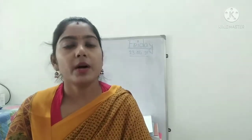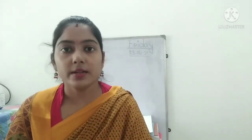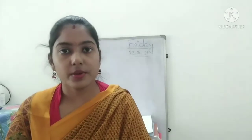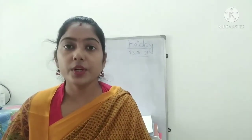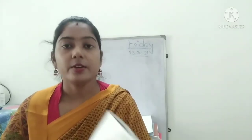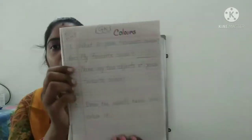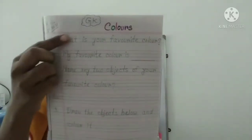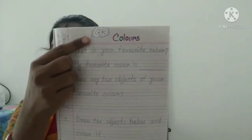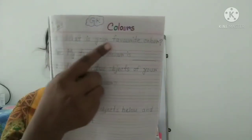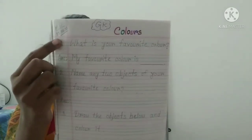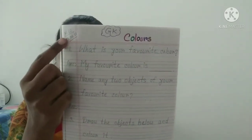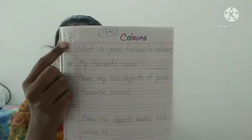You will do that in your GK copy. They have to learn the question-answer. So what you have to do in your copy is that first take out the page in your GK copy and you will write the heading on the top of your page — GK means general knowledge. After then, the topic: colors. And put HW and today's date in the corner.